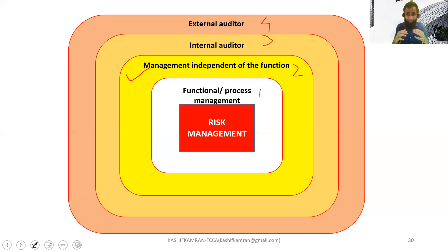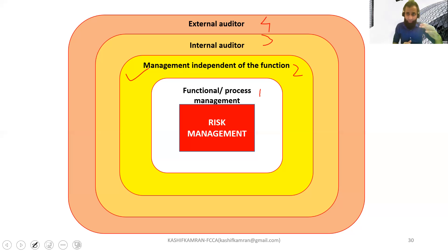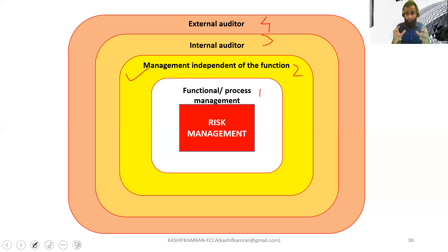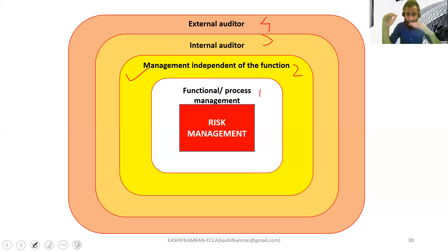So there are four lines of defense and four levels of assurance mapping. Line one: staff and management connected day-to-day with functions and processes ensure things are identified and controlled. Line two: management independent of the function provides oversight that line one is working. Line three: internal auditor conducts a holistic exercise across the organization finding loopholes. Line four: external auditor provides reasonable assurance across lines one, two, and three.